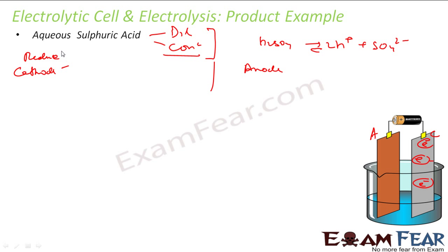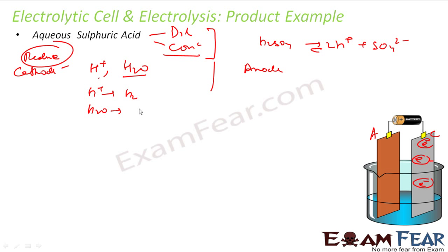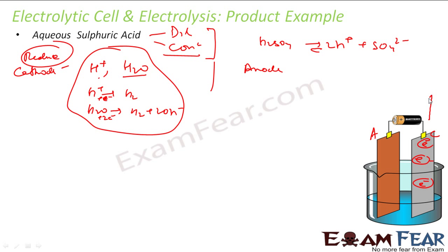What are the potential candidates for reduction? H⁺ can reduce, and water is also a candidate for reduction. Both are essentially the same — H⁺ getting reduced or water getting reduced both give hydrogen gas. H⁺ will give you hydrogen gas, and H₂O if reduced will take electrons and become hydrogen gas and OH⁻. So in both cases, the only possibility of gas coming out from cathode is hydrogen gas.